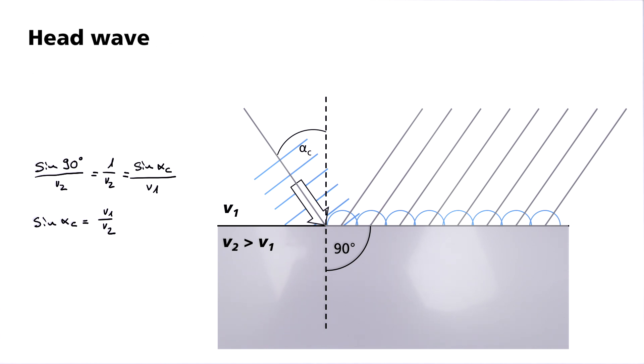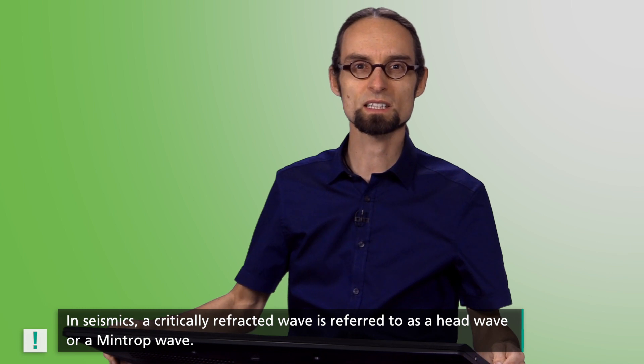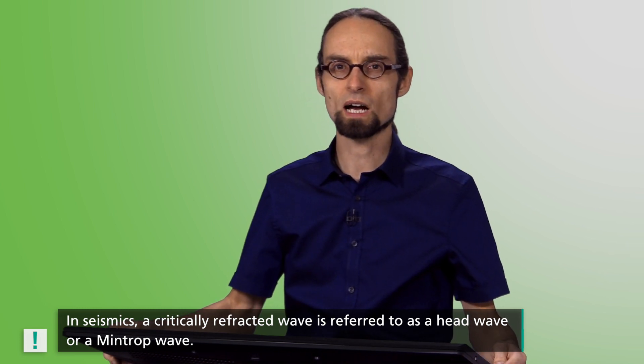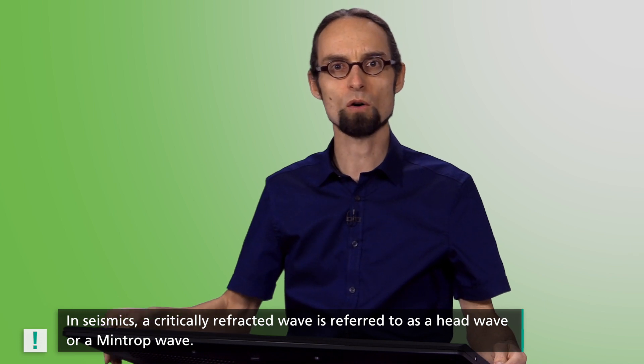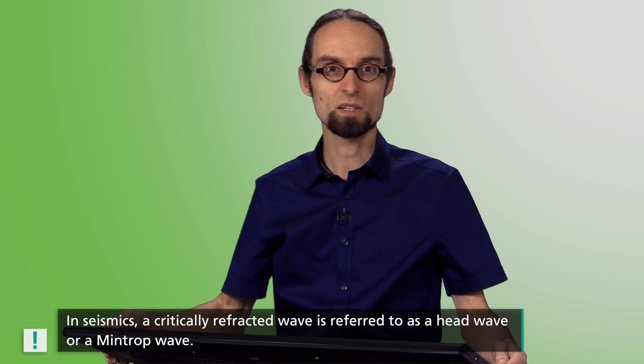On its path along the layer boundary, it constantly radiates seismic energy upwards. Again, under the critical angle alpha C, so that it can be measured at the earth's surface. In seismics, a critically refracted wave is referred to as a head wave or a mintrop wave. It is particularly useful for determining the location and course of layer boundaries in the earth's subsurface. The technique of refraction seismics is based on this principle.